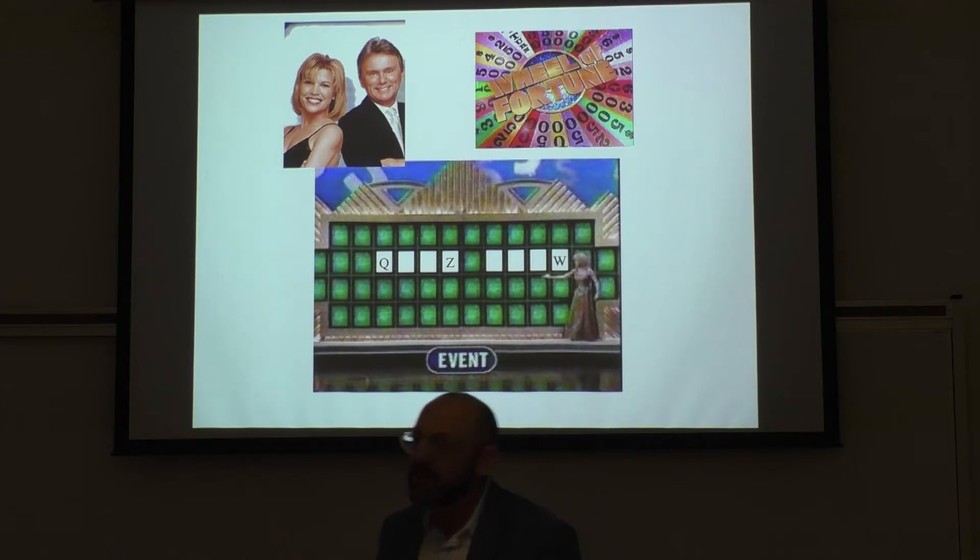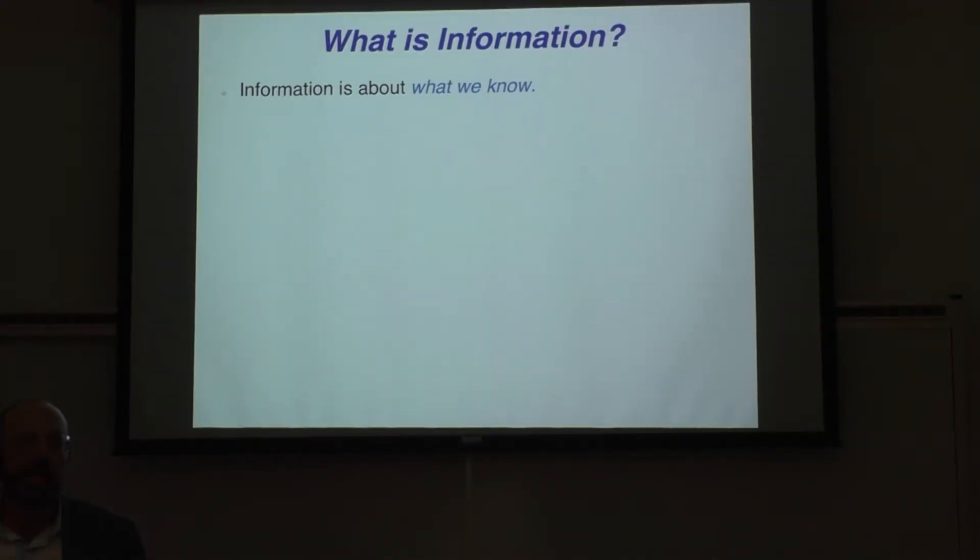Q and Z are letters that don't appear very often in the alphabet. They're very infrequent, whereas vowels appear in all kinds of ways. So this one has more information in it. And that has to do with what you bring to the problem. Information is about what we know and what we don't know.